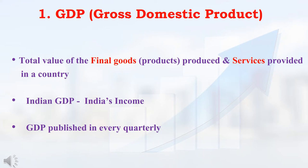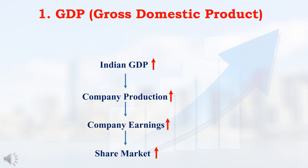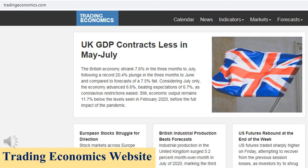Normally in all countries, every three months GDP is calculated and published. One country's wealth is decided based on that country's GDP. If one country's GDP is increasing, that country's overall business production is increasing and its overall business earnings are increasing. So whenever GDP increases, investors will get confident on the companies and will confidently invest in the share market, so the share market will have growth. In simple, if Indian GDP increases, then the Indian share market will have a positive impact.